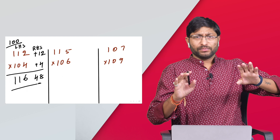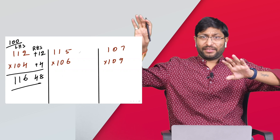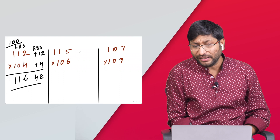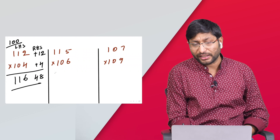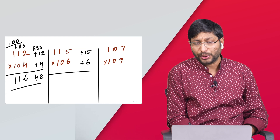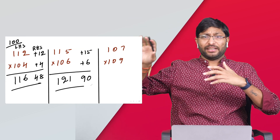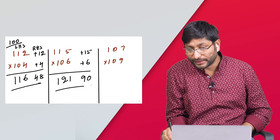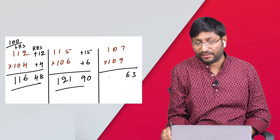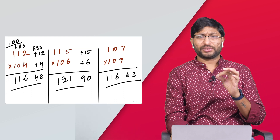For 115 × 106: once you understand the concept, do everything in your mind. +15 and +6. In the mind: 15 × 6 = 90. Left-hand side: 115 + 6 = 121. Answer: 12190. For 107 × 109: +7 and +9. Right-hand side: 7 × 9 = 63. Left-hand side: cross addition gives 116. Answer: 11663.